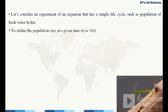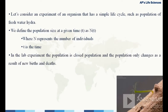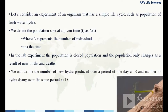We define the population size at a given time t as Nt, where N represents the number of individuals and t is the time. In this lab experiment the population is a closed population, and it changes only as a result of births and deaths — there is no emigration or movement into or outside the ecosystem.